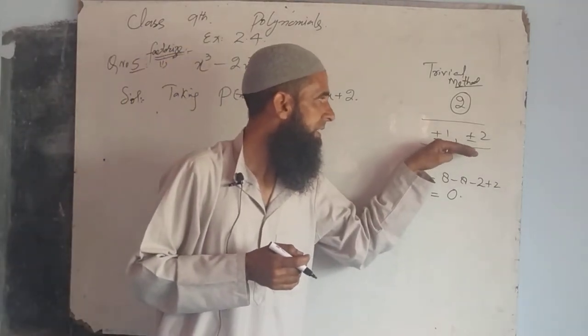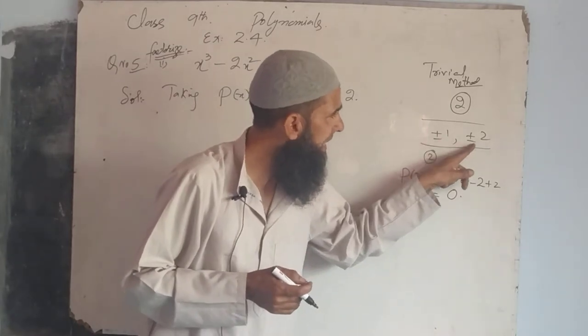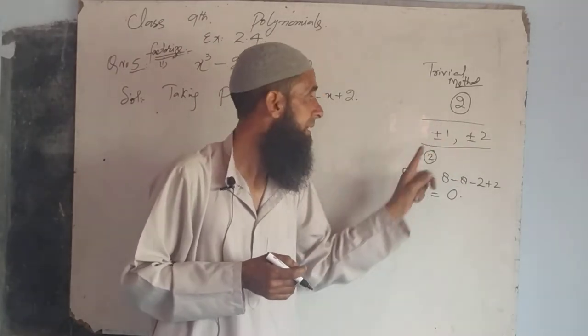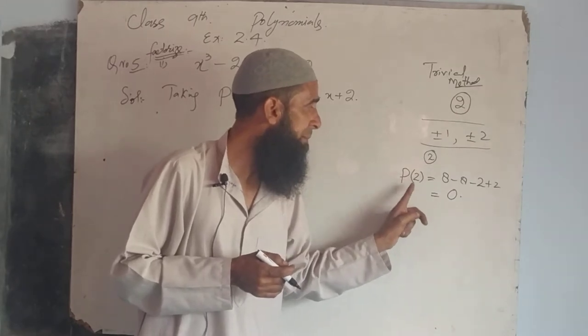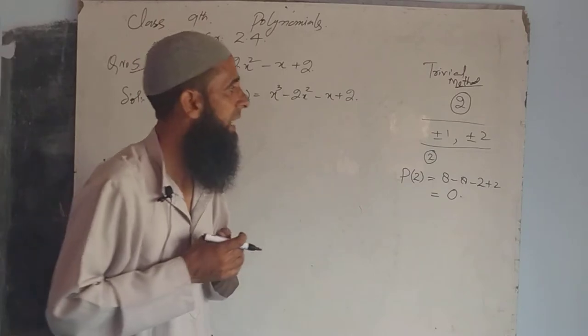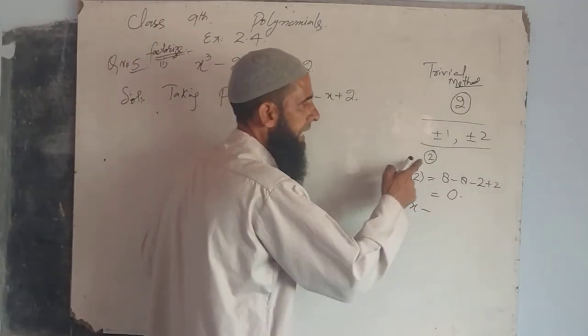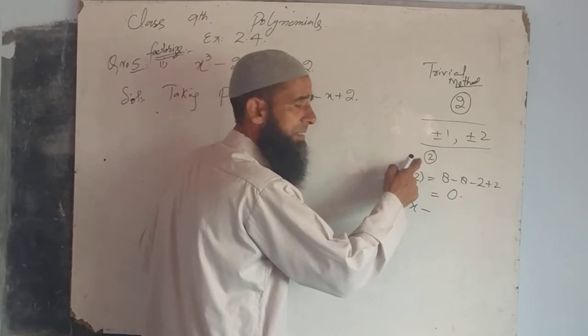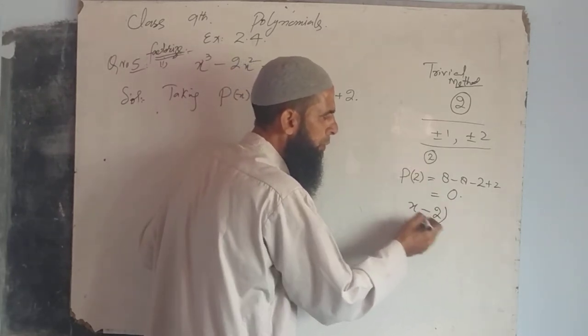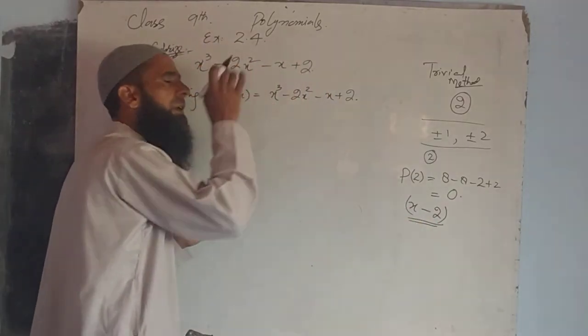Whichever factor of the constant term gives us polynomial value zero, by factor theorem, x minus that particular number - here x minus 2 - is a factor of this particular polynomial.